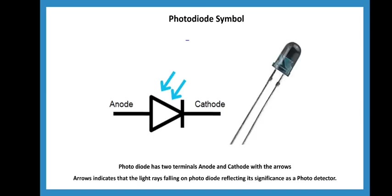The photodiode symbol has arrows pointing inward, indicating light falling on the photodiode. The LED symbol has arrows pointing outward. The photo diode has two terminals: anode and cathode with arrow indication. The arrow indicates that light is falling on the photodiode.